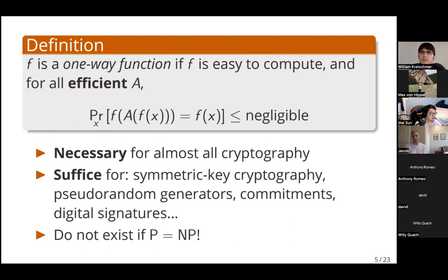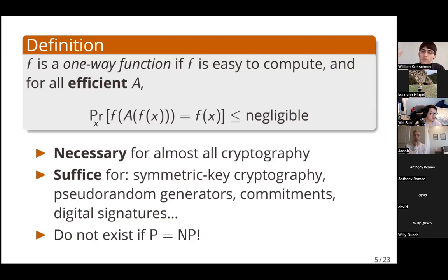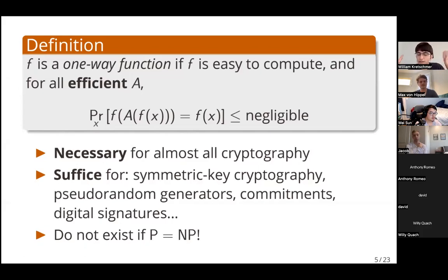Why do we care about one-way functions? There are three key things to note. First, it has been essentially rigorously established that for essentially all interesting cryptography, one-way functions turn out to be necessary. For a variety of cryptographic protocols including symmetric cryptography and key exchange, assuming that a secure such protocol exists, you actually conclude that there must also exist a one-way function f. It also turns out that one-way functions are sufficient for a wide range of cryptography, including symmetric cryptography, pseudorandom generators, commitments — giving you a big range of useful cryptography.